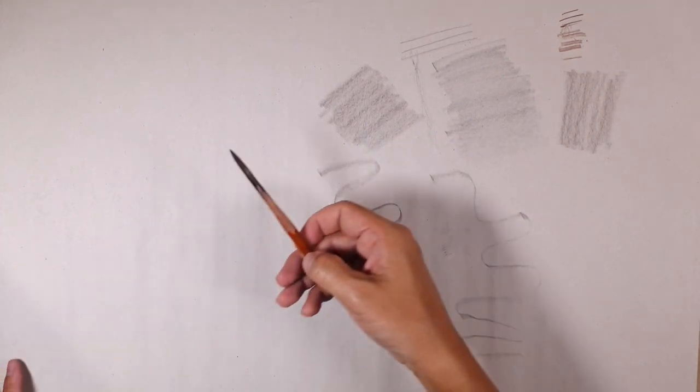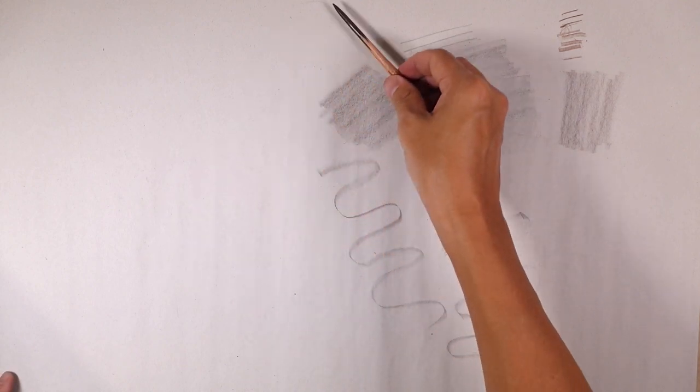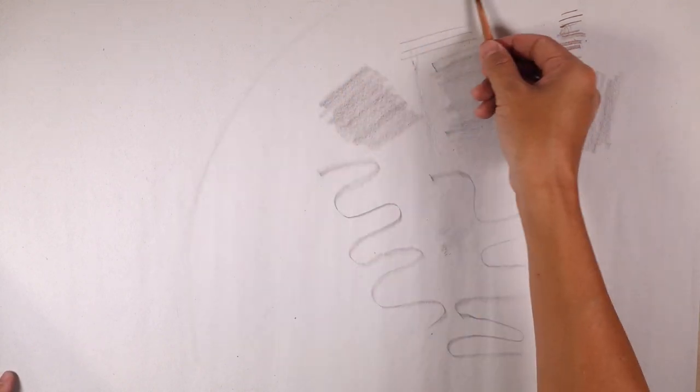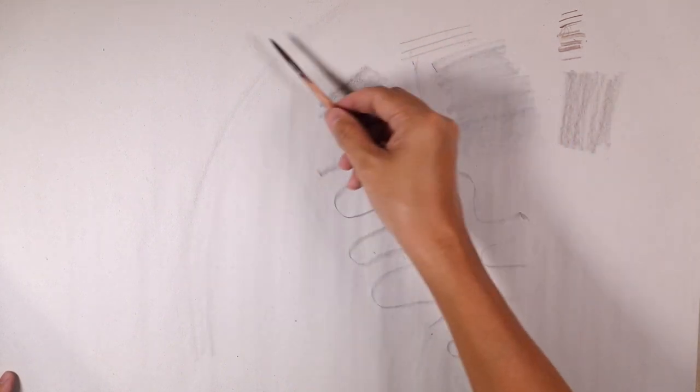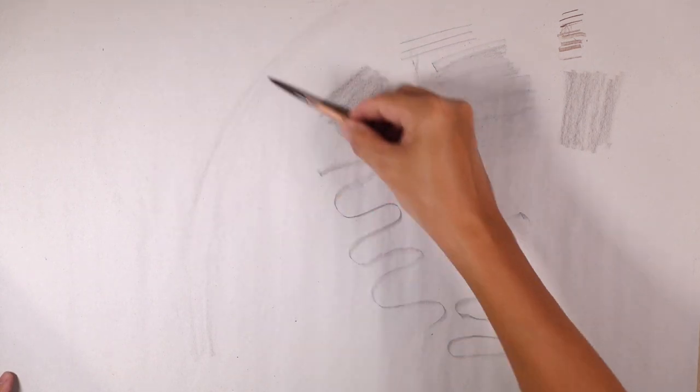Once again, with this, I'm doing the overhand grip. I'm able to draw with my shoulder, big lines, long lines, very controlled.